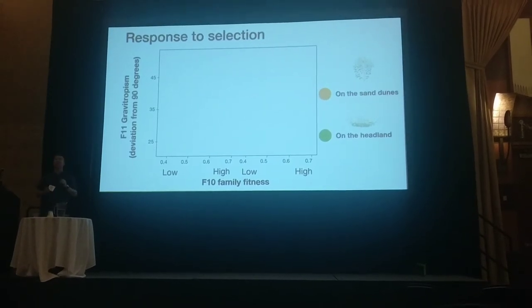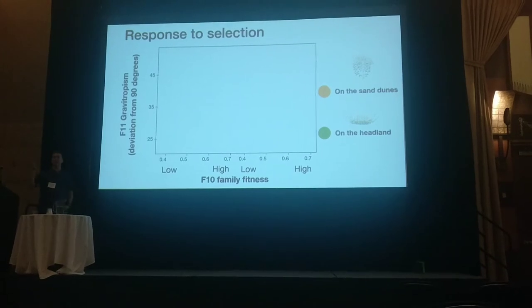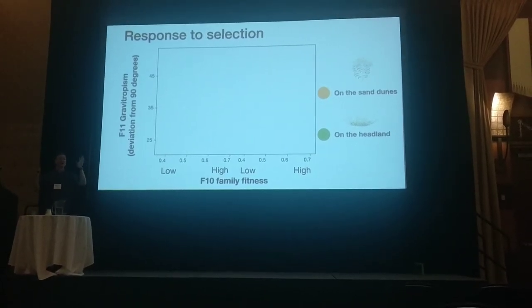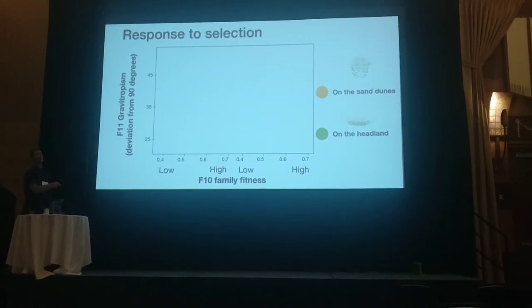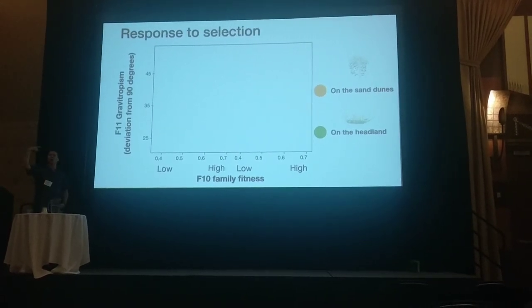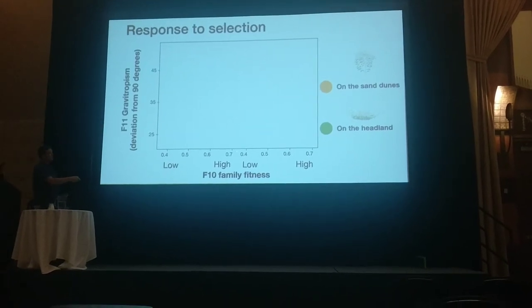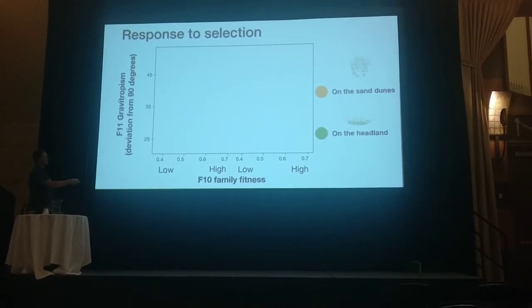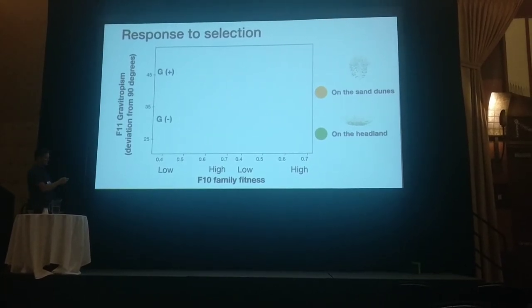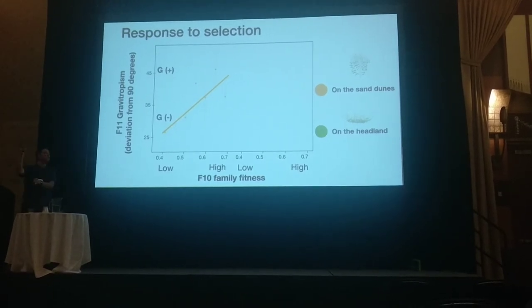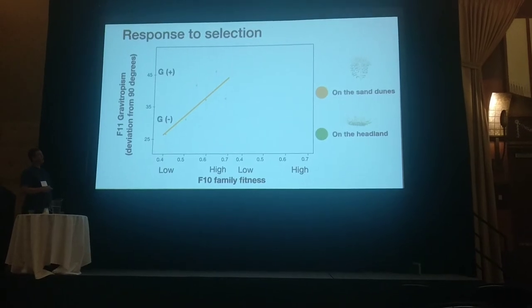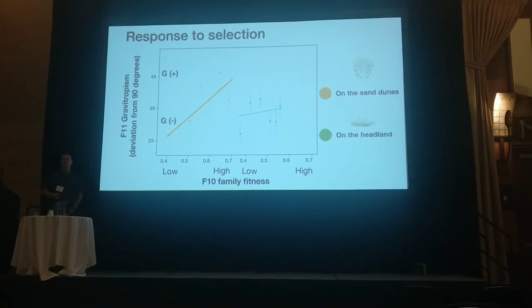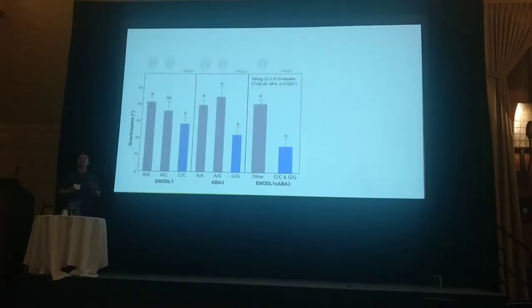This is what we see with respect to whether gravitropism can respond to selection. On the x-axis we have the fitness of the family in the field — some families have many offspring, others very few. On the y-axis we have the gravitropism phenotype of offspring measured in the glasshouse. In the sand dune panel, high-fitness families should be highly gravitropic, and low-fitness families should be non-gravitropic — and that is exactly what we see. So over just a few years under very strong selection, we can make the population respond in the expected direction of the local ecotype. On the headland, most families have moderately a-gravitropic phenotypes, and we find those.